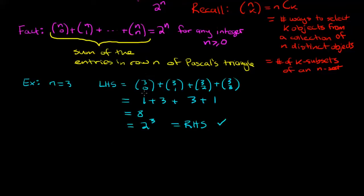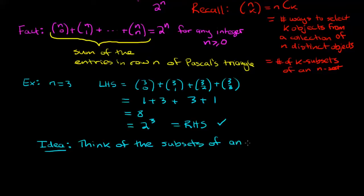But if you think about what three choose zero actually means, it's the number of zero-subsets of a set of size three, and similarly for all the others — they're the number of one-subsets, two-subsets, and three-subsets. So the idea is to think about the subsets of an n-set, in this case a three-set: one, two, and three, because n equals three.